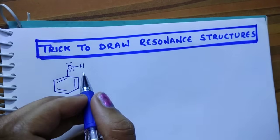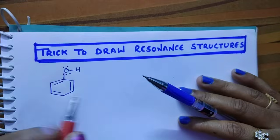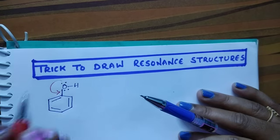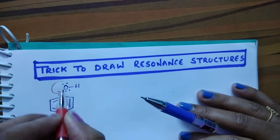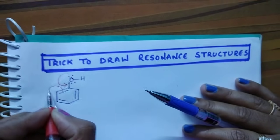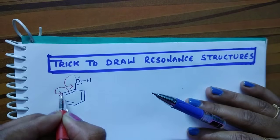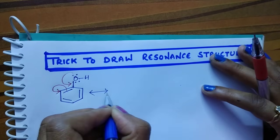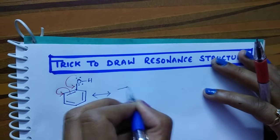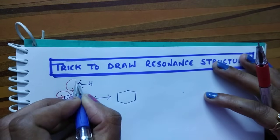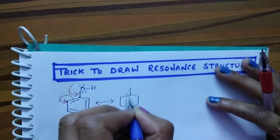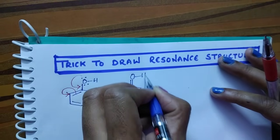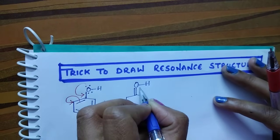What happens here is this lone pair shifts here. When the lone pair shifts, a bond will form and this bonded electron shifts — the pi electron shifts to this carbon. We get a double-headed arrow representing resonance. When these two electrons shift here, we get one extra bond, and here oxygen is present with H and still one lone pair is left.